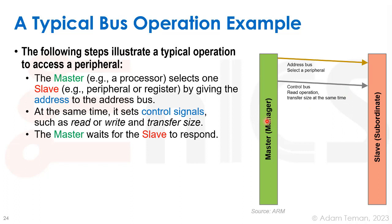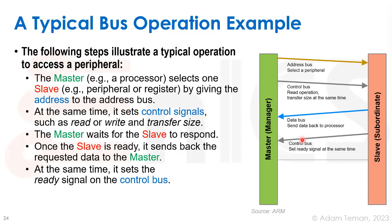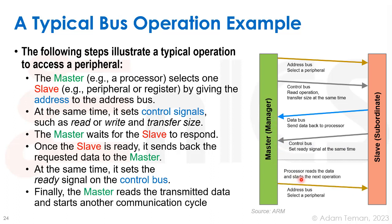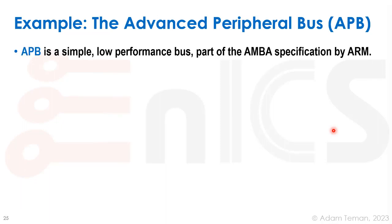The master waits while the slave performs its operation. Once ready, the slave sends back the requested data and a ready signal indicating it's finished and can accept another transfer. The master can then use the data and initiate another cycle. To illustrate this with a real bus, we'll use the Advanced Peripheral Bus — APB — a simple low-performance bus from ARM's AMBA specification, which is a popular open bus architecture.